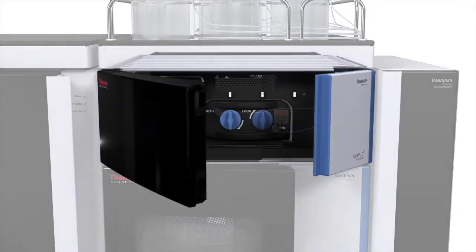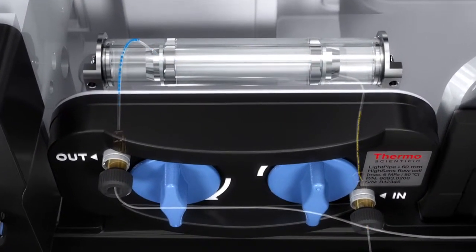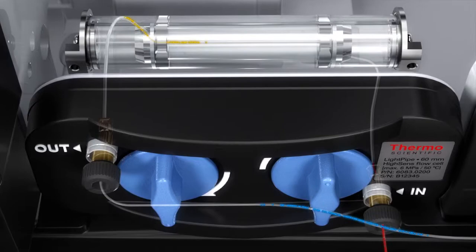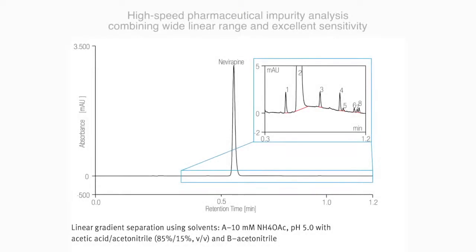The Thermoscientific Vanquish system features Thermoscientific light pipe technology flow cells. The 6cm optical path length and industry-leading signal-to-noise performance will ensure excellent sensitivity,